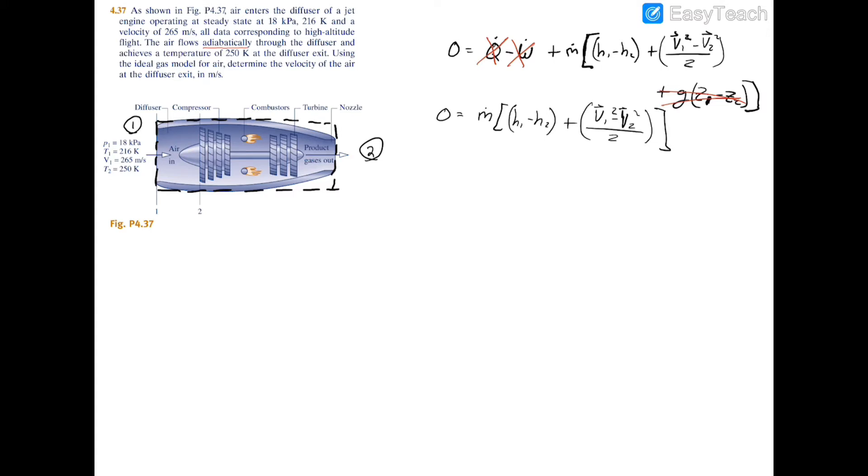So now I see that I just need these enthalpies, these velocities, and the mass flow rate. I have the temperature at one and two, so these should be no problem to get from the property table of air. I also have velocity one, and of course velocity two is what we're looking for from the diffuser exit. First off, if we divide both sides by the mass flow rate we can easily get rid of it. You're going to be left with h1 minus h2 plus v1 squared minus v2 squared over two equals zero.